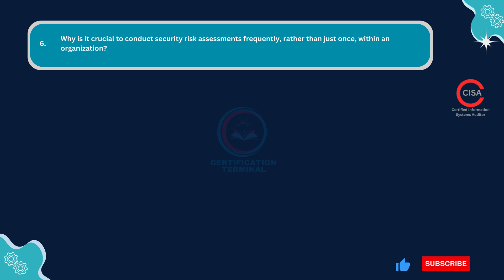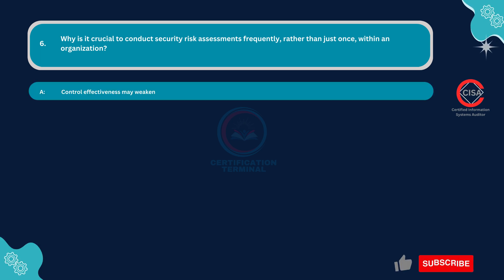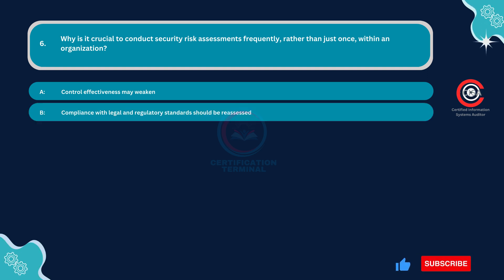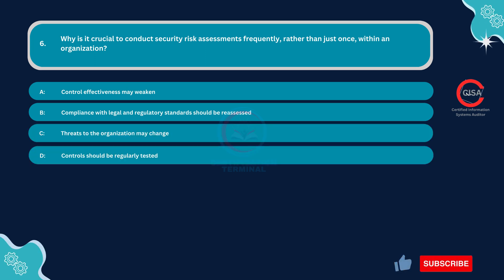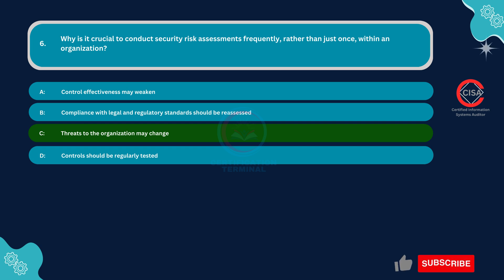Question 6: Why is it crucial to conduct security risk assessments frequently, rather than just once, within an organization? Option A: Control effectiveness may weaken. Option B: Compliance with legal and regulatory standards should be reassessed. Option C: Threats to the organization may change. Option D: Controls should be regularly tested. The correct answer is Option C: Threats to the organization may change.